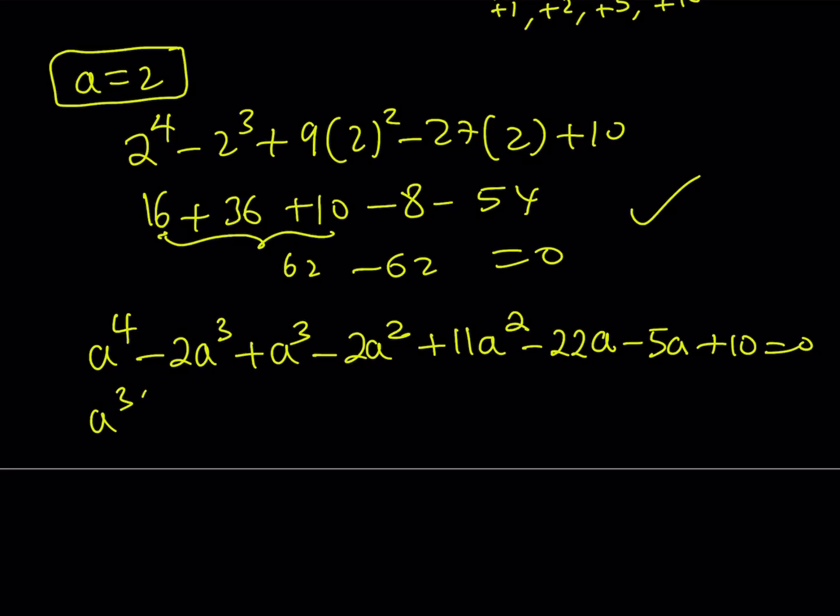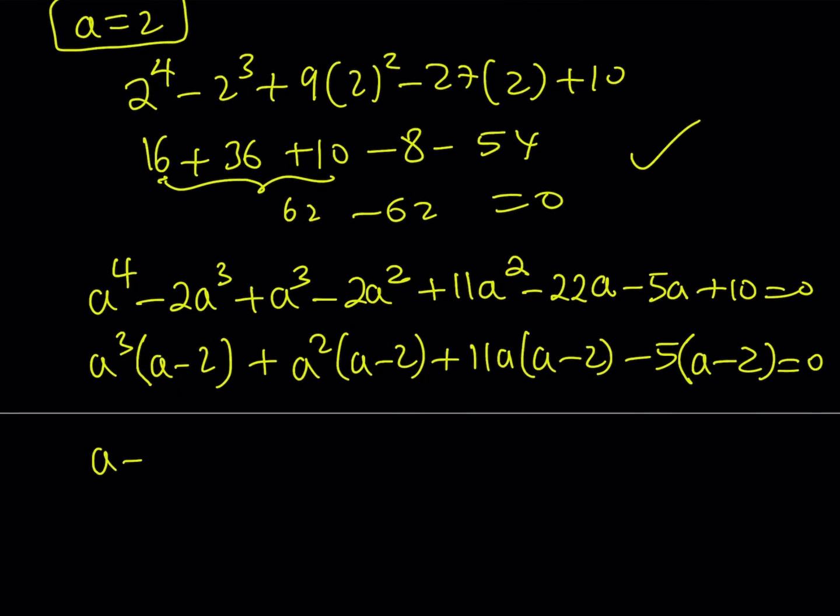Now here, if you take out a cubed, you get a minus 2. And then if you take out a squared, you get a minus 2, which shouldn't be a surprise. 11a times a minus 2, and finally minus 5 times a minus 2 equals 0. So now we are able to factor this. a minus 2 obviously is a factor because a equals 2 is a solution. And the rest is going to be a cubic. a cubed plus a squared plus 11a minus 5 equals 0.